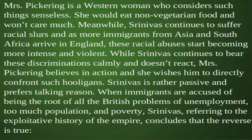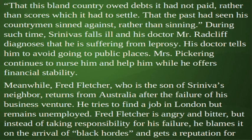She would eat non-vegetarian food and won't care much. Meanwhile, Srinivas continues to suffer racial slurs and as more immigrants from Asia and South Africa arrive in England, these racial abuses start becoming more intense and violent. While Srinivas continues to bear these discriminations calmly and doesn't react, Mrs. Pickering believes in action and she wishes him to directly confront such hooligans. Srinivas is rather passive and prefers talking reason. When immigrants are accused of being the root of all the British problems of unemployment, too much population and poverty, Srinivas, referring to the exploitative history of the empire, concludes that the reverse is true — that this bland country owed debts it had not paid, rather than scores which it had to settle, and that the past had seen his countrymen sinned against rather than sinning.